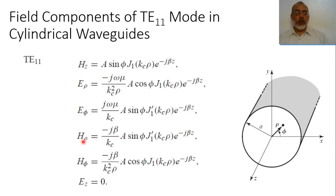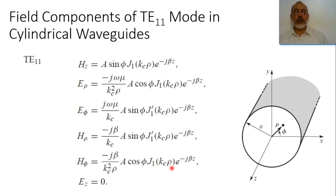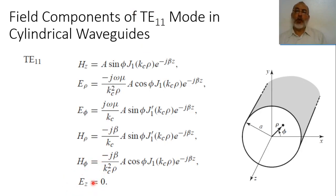In a similar way, H_rho is proportional to the derivative of Hz with respect to ρ, giving −jβ/k_c times A sin(φ) times J1'(k_c ρ). And H_phi is proportional to (1/ρ)(∂Hz/∂φ), giving −jβ/(k_c² ρ) times A cos(φ) times J1(k_c ρ) e^{−jβz}. Also, Ez equals 0 because we are talking about the transverse electric mode, so there is no longitudinal electric field component.